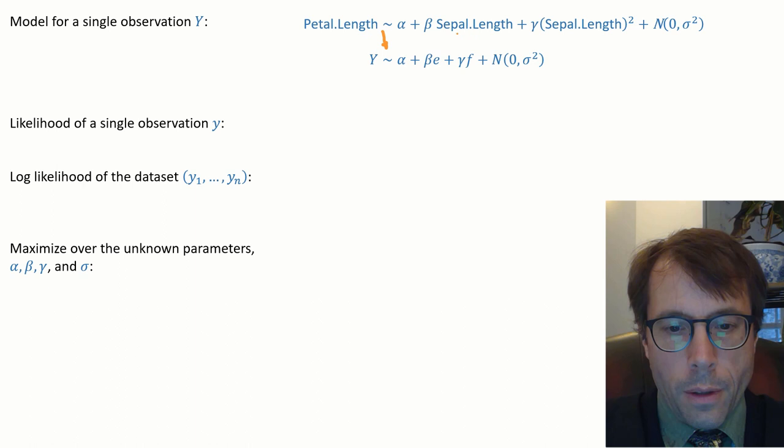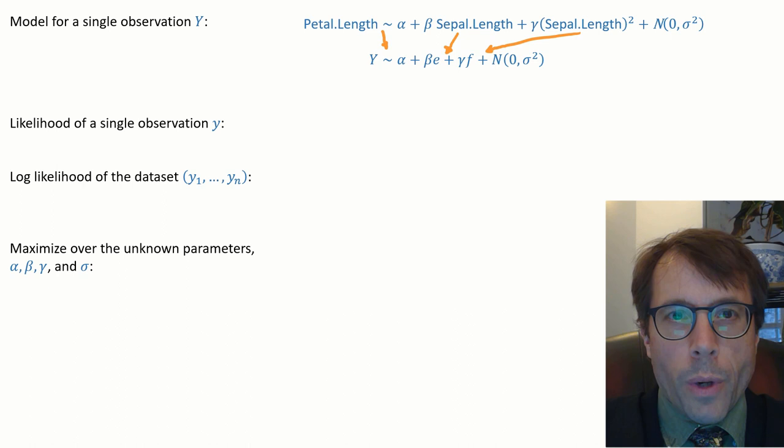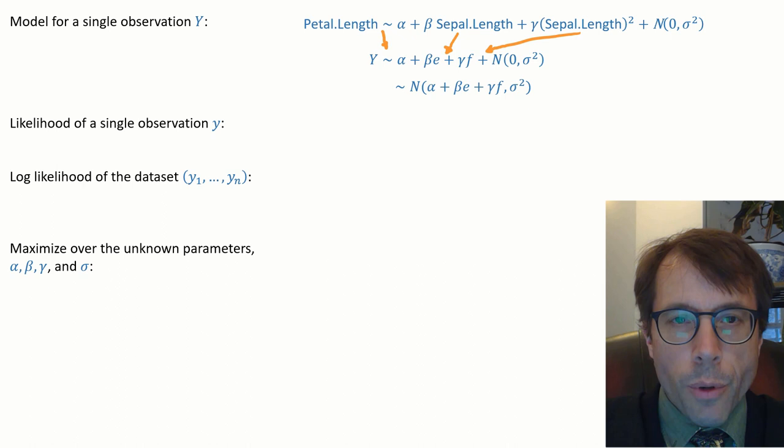First, we write out the probability model for a single observation. Let petal length be alpha plus beta sepal length plus gamma sepal length squared plus normal of 0 sigma squared. I'm just going to write it out with condensed notation to save some writing time. I'll let y be the petal length, e be the sepal length, f be sepal length squared.